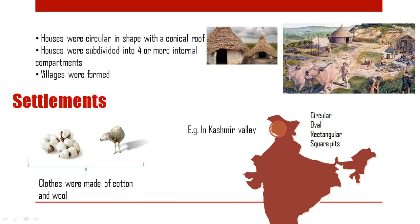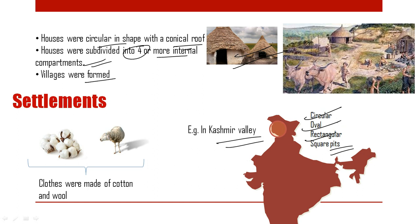The houses were circular in shape with a conical roof. For example, in Kashmir Valley, the Neolithic people lived in circular, oval, rectangular or square dwellings. The houses were subdivided into four or more internal compartments, and villages were formed at a later stage. The people of the Neolithic age used clothes made of cotton and wool.